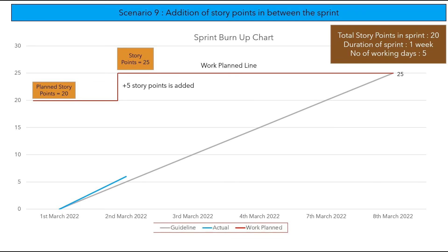In another scenario, the team adds more story points in between the sprint. Though addition or reduction of story points is not recommended mid-sprint, it can occur due to unavoidable circumstances. The planned story points were 20 before starting the sprint, but after completing one day, the team adds 5 story points, so the work plan line goes up by 5, making the total 25. The guideline will recalculate and adjust based on the added story points so that the guideline and work plan line join together exactly at the end of the sprint. The actual line continues based on team performance.